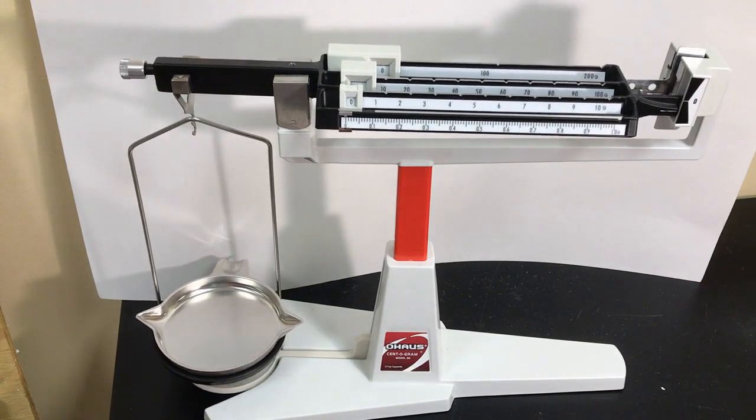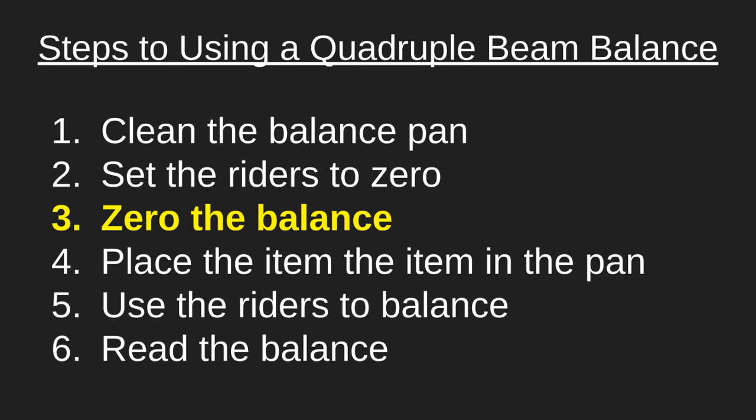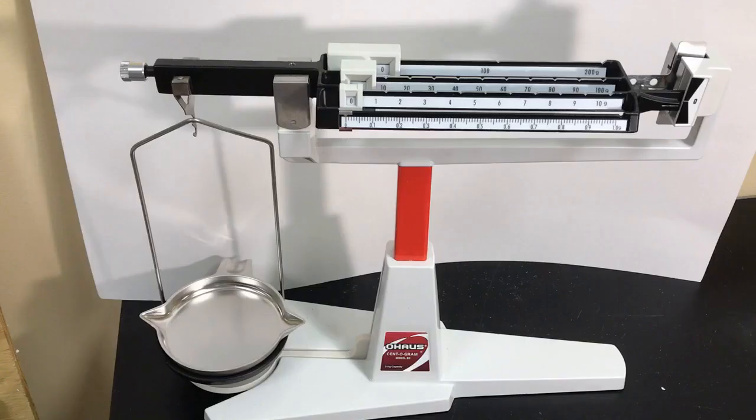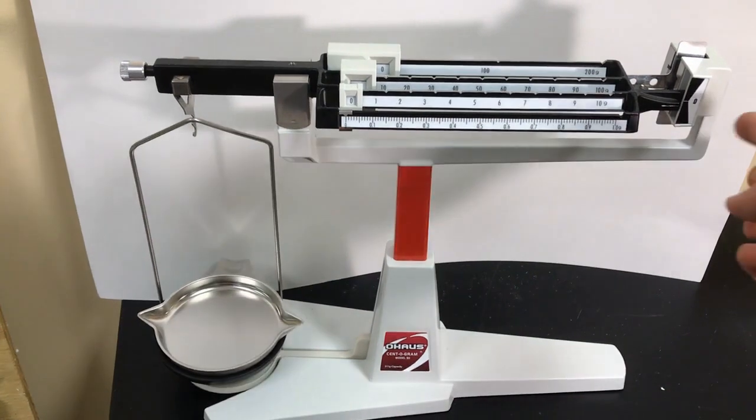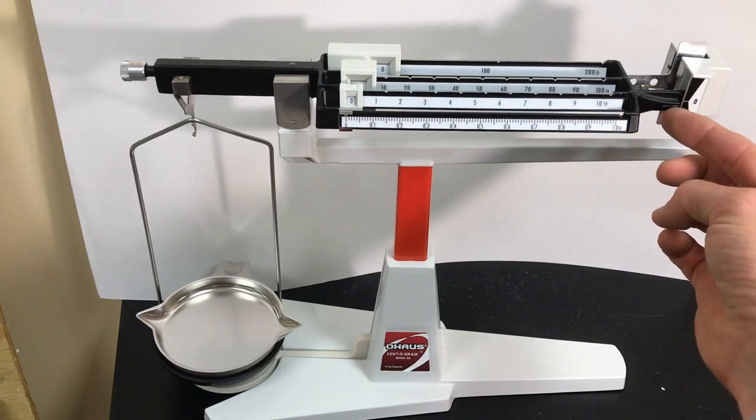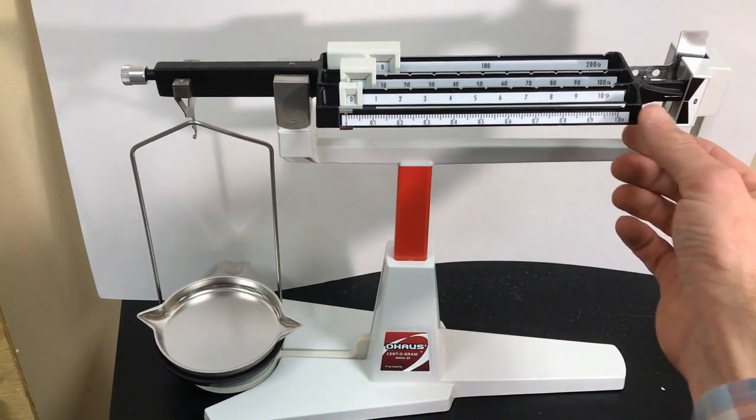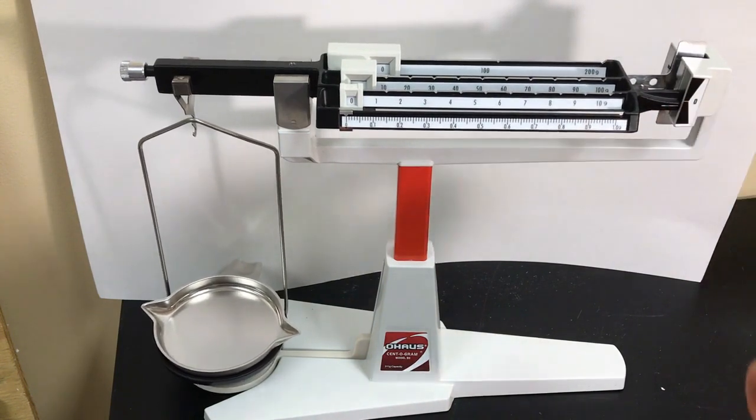Now we want to do what's known as zeroing the balance. And that means getting this little line right here lined up with the zero line. So our line on our beam here lined up with a zero here. Right now I'm a little bit low.